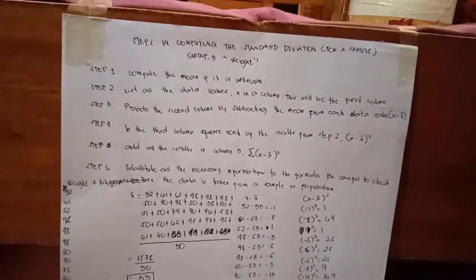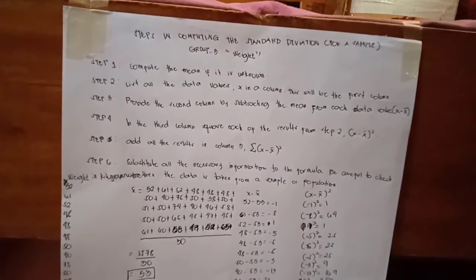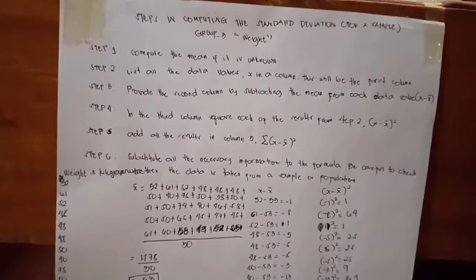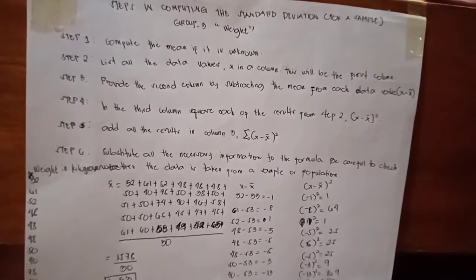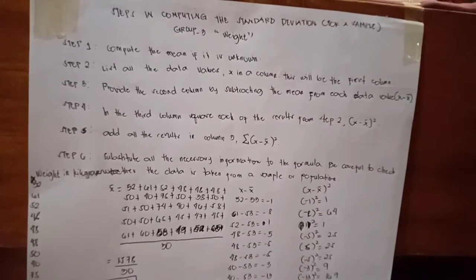For step 5, add all the results in column 3. And for the last step, substitute all the necessary information to the formula. Be careful to check if the data is taken from a sample or population.